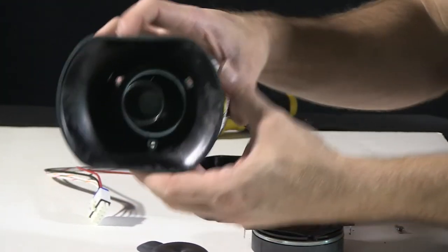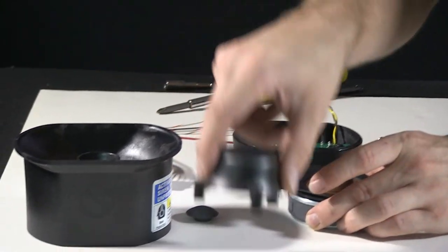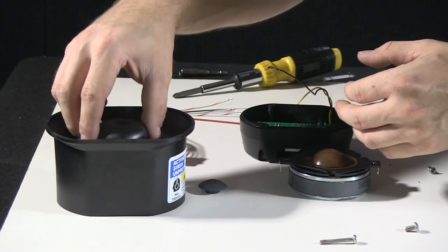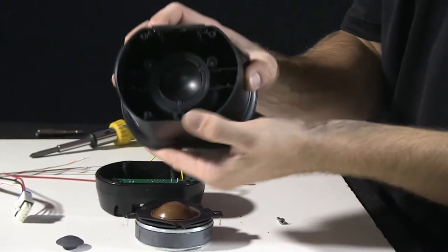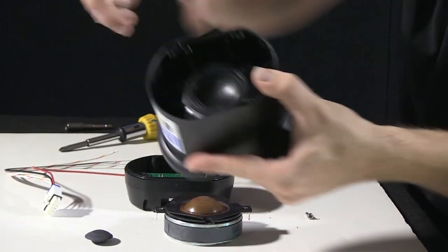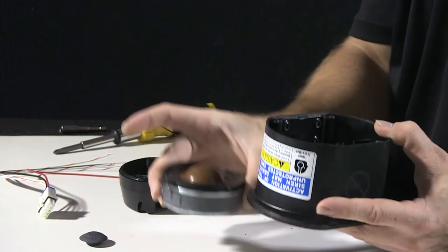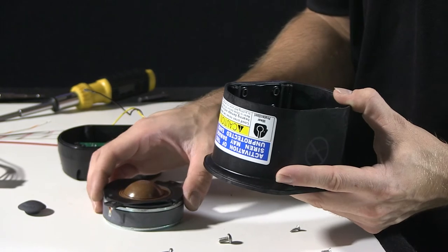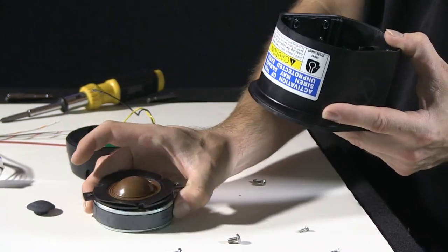I'm going to go ahead and reassemble the front portion with the driver and the cone protector assembly. Again, inside here, the dimple will match up to the dimple on the top of the driver. Also, the three mounting screws.